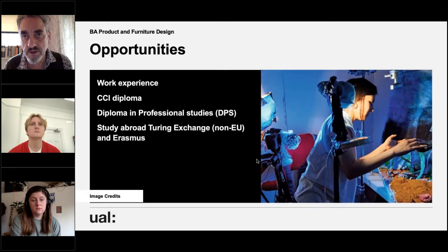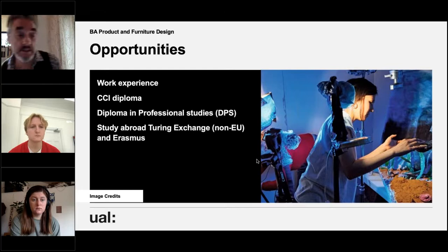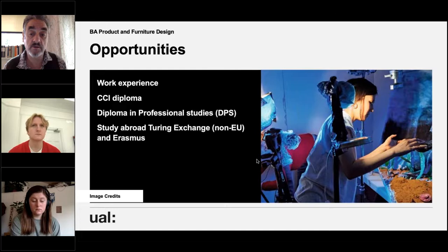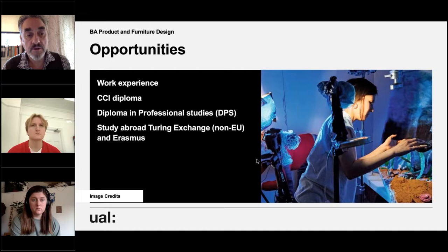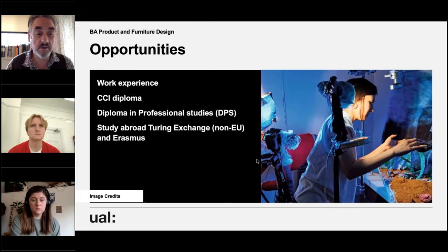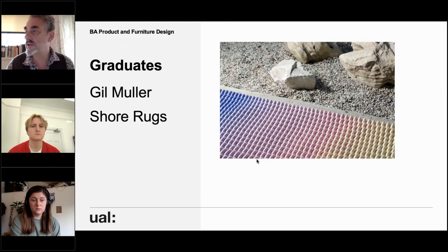You can do a DPS — a Diploma in Professional Studies — where you can do an internship or whatever we can find for you, or you can find yourself. There's somebody at the moment working for a flooring company for a whole year; they're being taken to Milan as part of that. So you can extend your course to four years and have a year out where you're still in contact with staff and supported by the university, but learning what it's like in the real world. There are still versions of Erasmus called the Turing Exchange being developed, so there are still opportunities to go to other institutions in Europe and around the world.